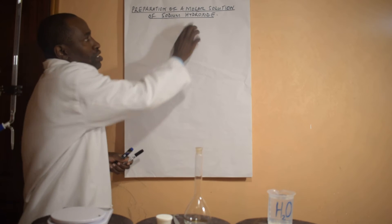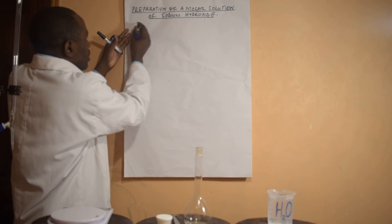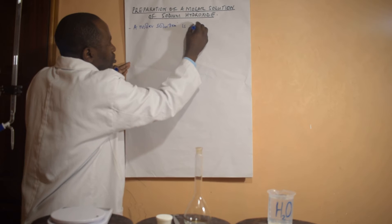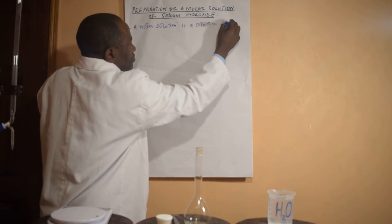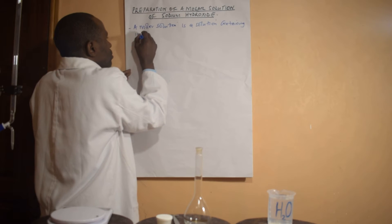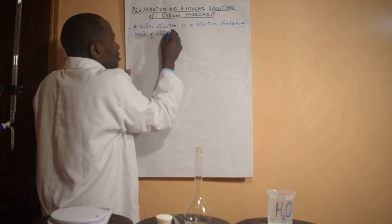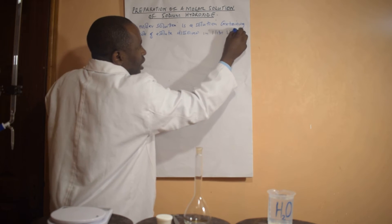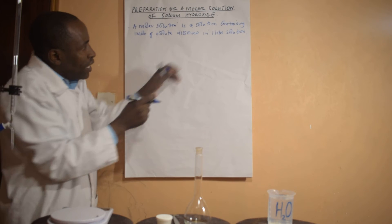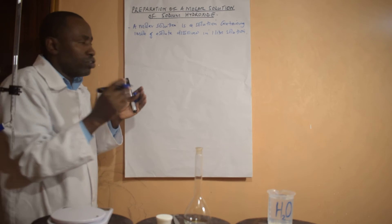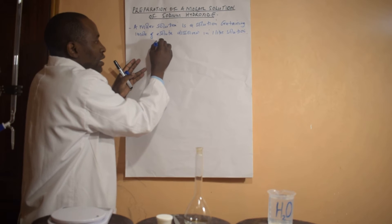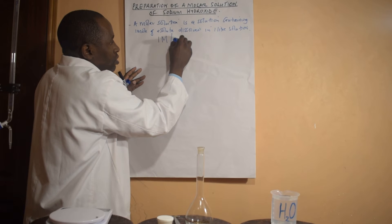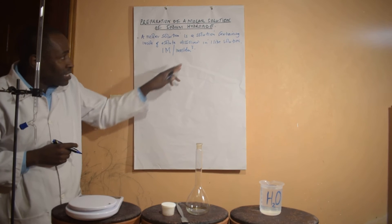I will start by defining what a molar solution is. A molar solution is a solution containing one mole of a solid dissolved in one liter — or one cubic decimeter — of solution. In other words, if we are talking about a solution whose concentration is one capital M, where M refers to molarity, or one mole per cubic decimeter.